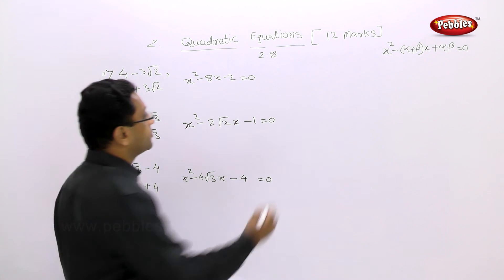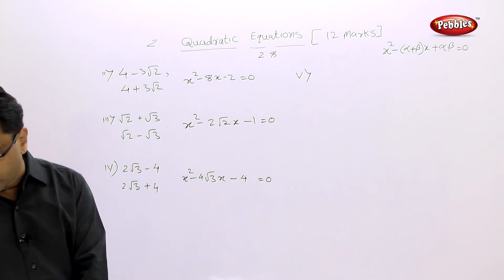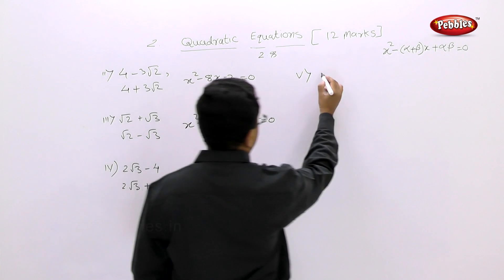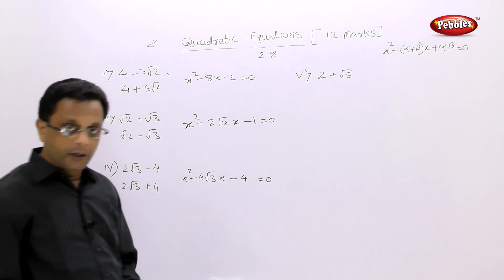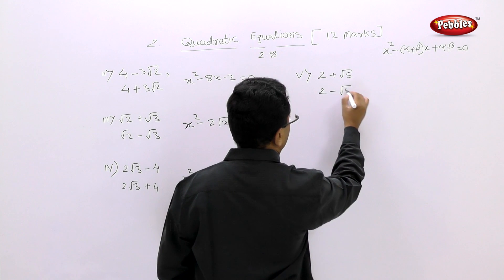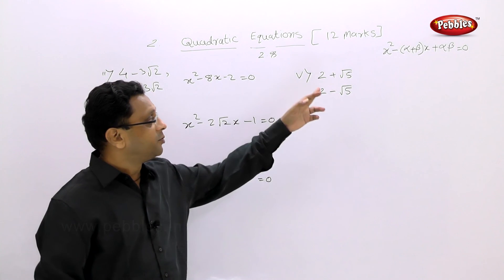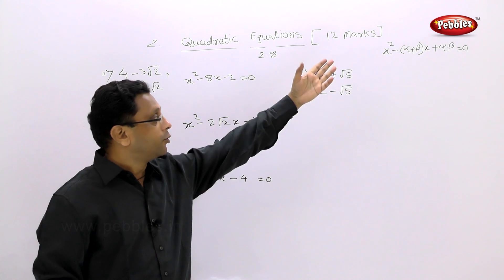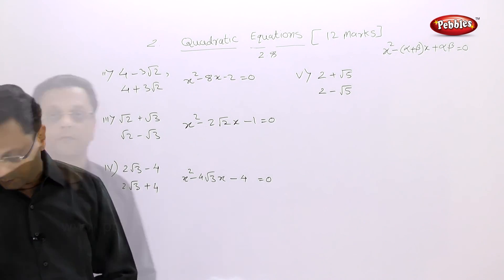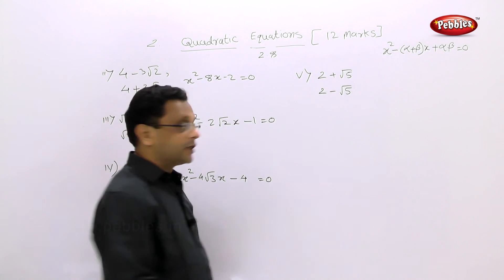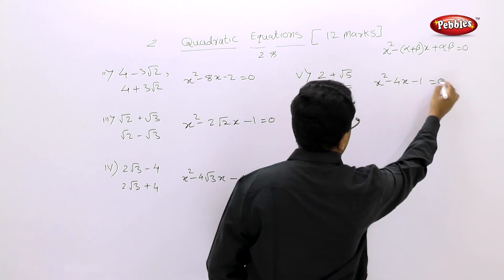Fifth example: the one root given is 2 plus root 5. What will be the other root? The conjugate is 2 minus root 5. Pause your video and solve — find alpha plus beta, alpha times beta, substitute and find out the quadratic equation. The answer is x squared minus 4x minus 1 equal to 0.